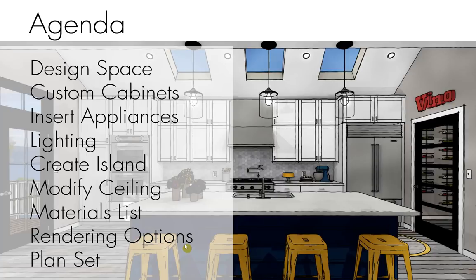I want to take a moment to review our agenda. We'll begin by designing our space using wall tools and dimensioning tools. We'll create custom cabinets on the back of our kitchen, then insert appliances. We'll add lighting, create an electrical plan, design an island, modify our ceiling, generate a materials list, show rendering options, and conclude with a plan set. So let's jump in and get started.